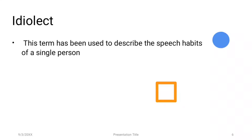Then idiolect. The language spoken within the premises of a house, which is different from the rest of the society, is known as idiolect. This term has also been used to describe the speech habits of a single person. It applies to both written and spoken texts. Dialects are made of idiolects — dialects are basically a combination of idiolects.